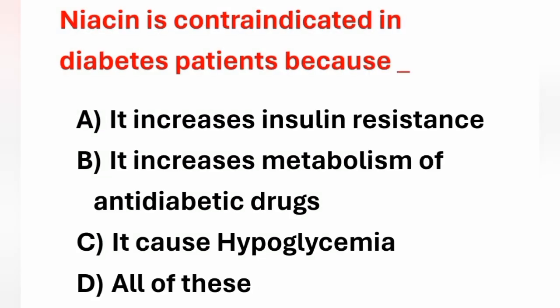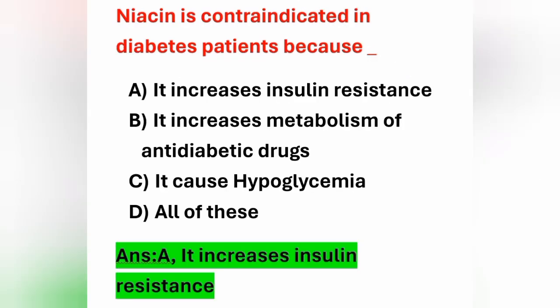Next question: niacin is contraindicated in diabetes patients because — option A: it increases insulin resistance, option B: it increases metabolism of anti-diabetic drugs, option C: it causes hypoglycemia, option D: all of these. The answer is option A — niacin increases insulin resistance, which is why it is not given to diabetic patients.